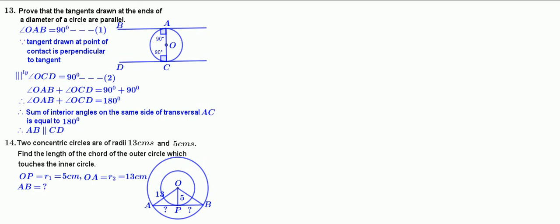In triangle OAP, angle P equal to 90 degrees. Therefore, OA squared equal to AP squared plus OP squared by Pythagorean theorem. Therefore, 13 squared equal to AP squared plus 5 squared.